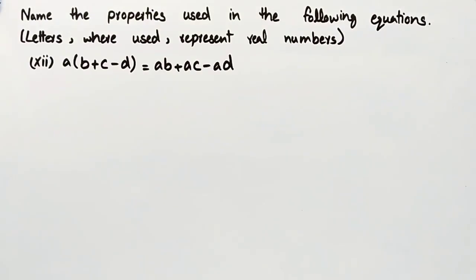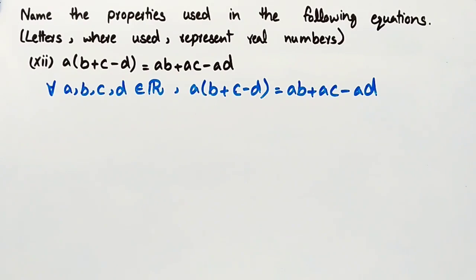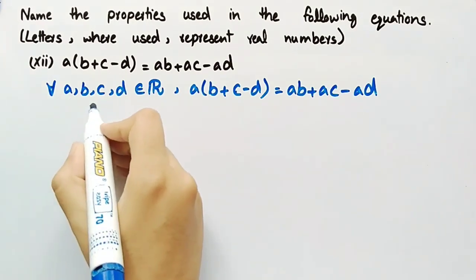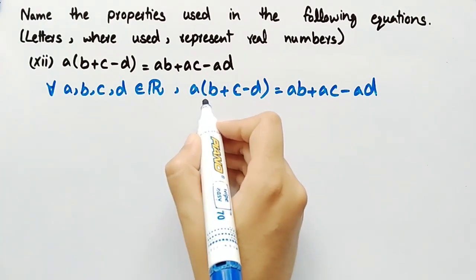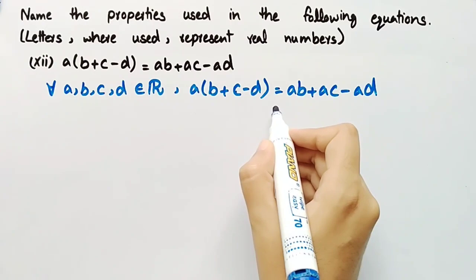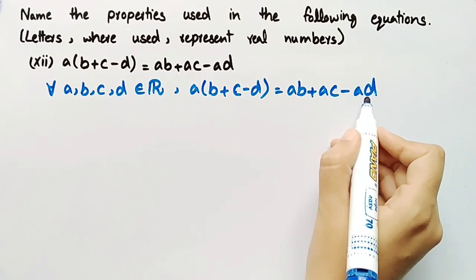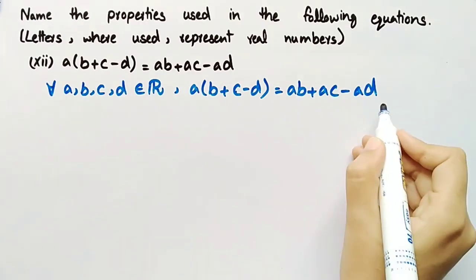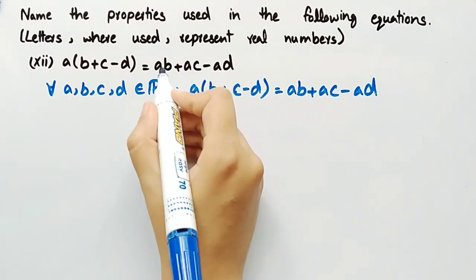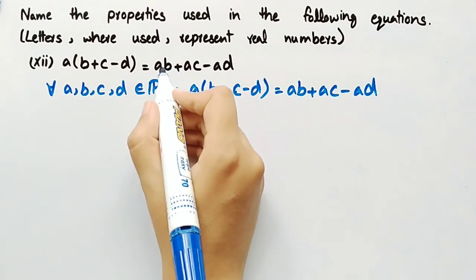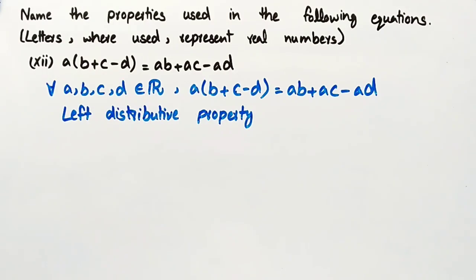Equation number 12 is A multiplied by (B plus C minus D) is equal to AB plus AC minus AD. The property used in this equation is the left distributive property.